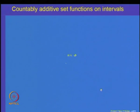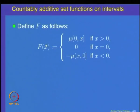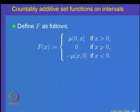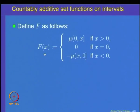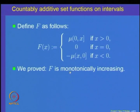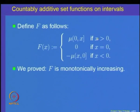Let us recall how we defined this function f. We defined f(x) as mu of (0,x] if x is greater than 0; zero if x equals 0; and minus mu of (x,0] if x is less than 0. We proved that f is monotonically increasing, using the fact that mu is a finitely additive set function.